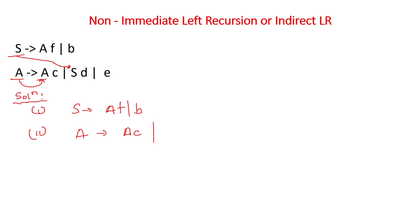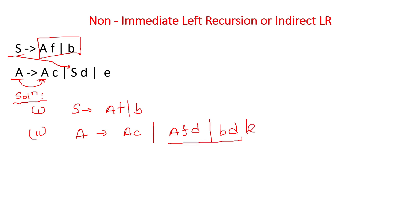We write A = Ac, and in the second grammar we replace the value of S. Instead of S, we write AFD or BD. So A = Ac | AFD | BD. This substitution replaces S with its production. We can now identify the format: this is alpha 1, this is alpha 2, this is beta 1, and this is beta 2.